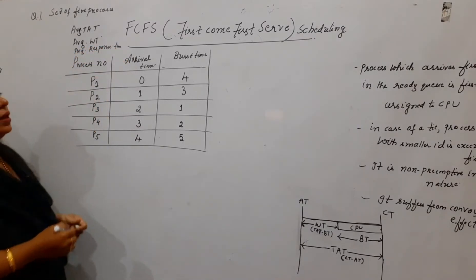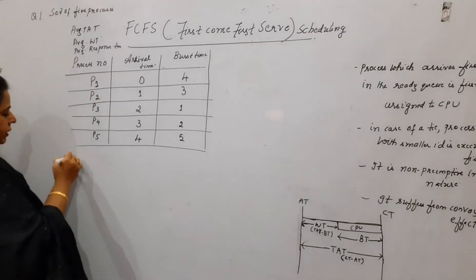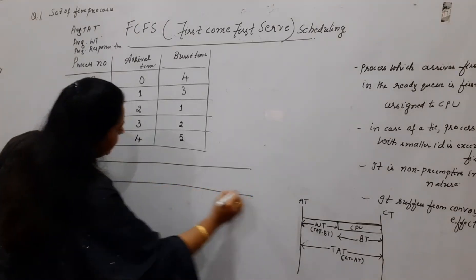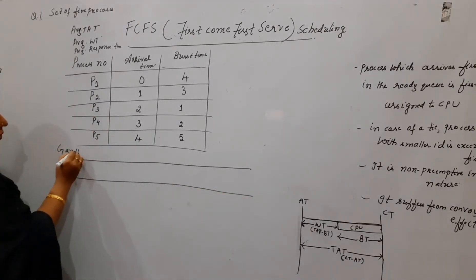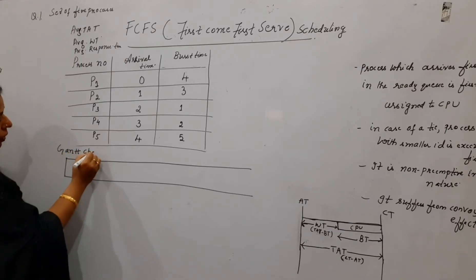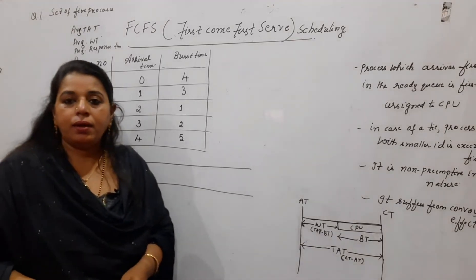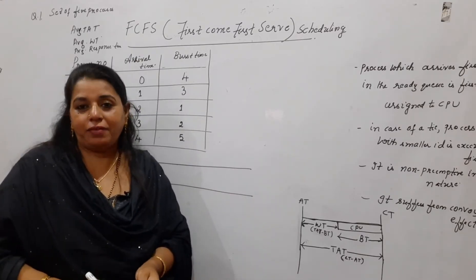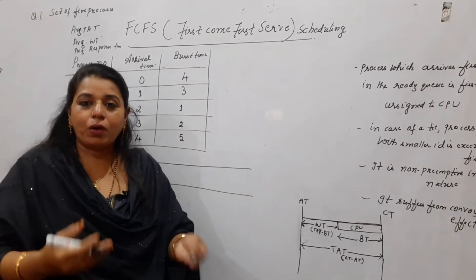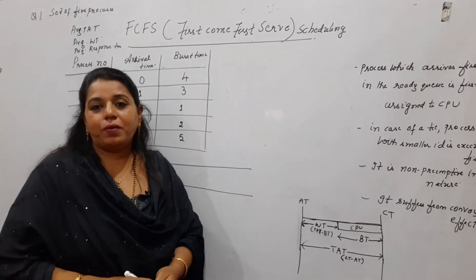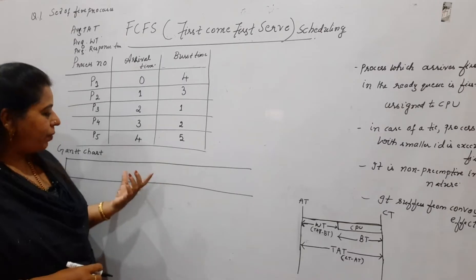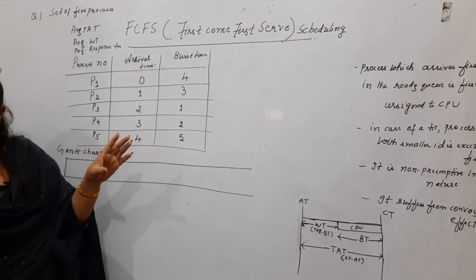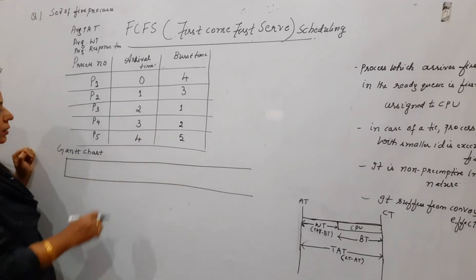First, use a particular chart called the Gantt chart — G-A-N-T-T. A Gantt chart is basically a bar chart used in organizations to show the schedule of different activities, showing at what time a particular activity starts and what time it ends. That type of chart is used here to illustrate the working of this algorithm.